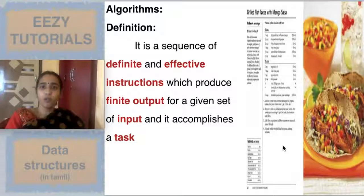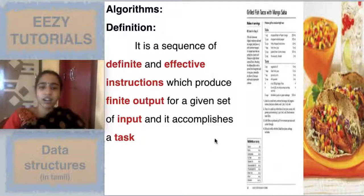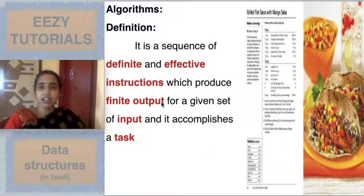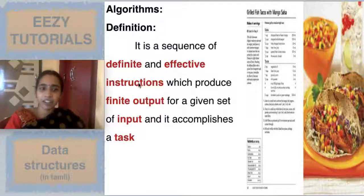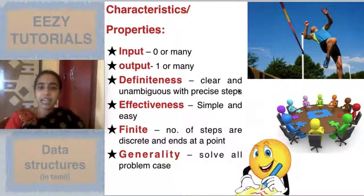Similarly, an algorithm gives you a finite output for a given set of input and accomplishes a task. The definition of an algorithm has three main characteristics: definite, effective, and finite. Definite means it should be clear and unambiguous with precise steps.